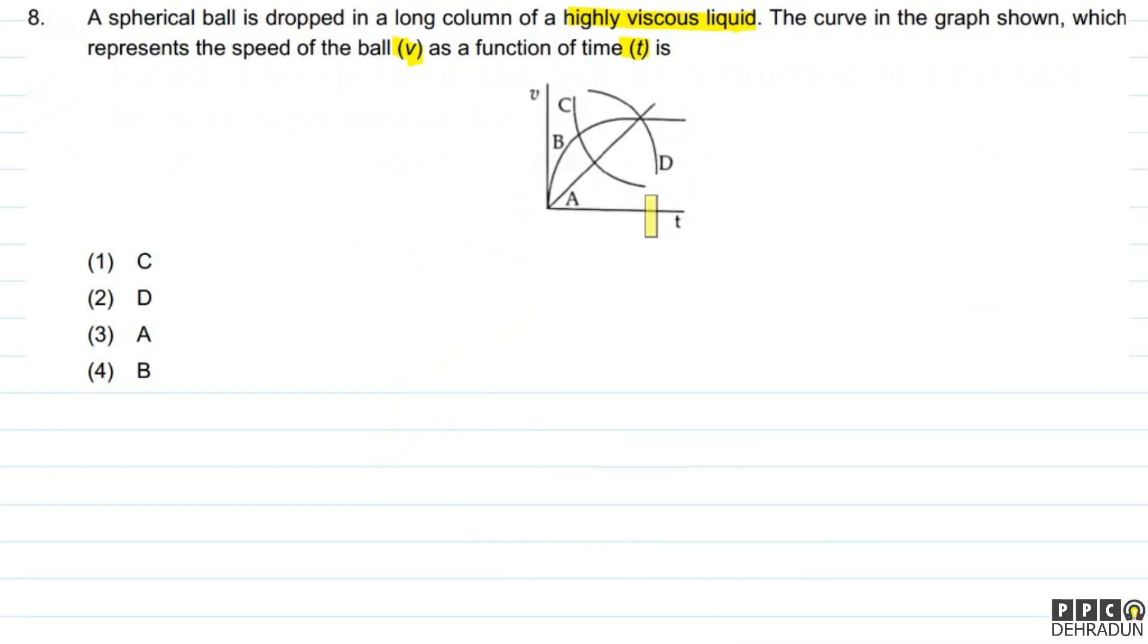This is graph B. This is the particular velocity the ball can attain after some time. This is terminal velocity.